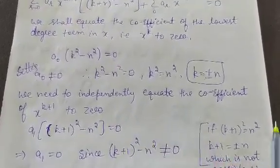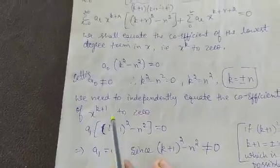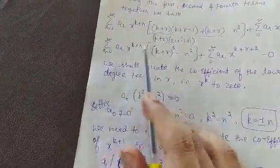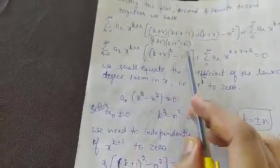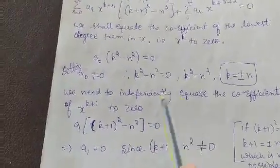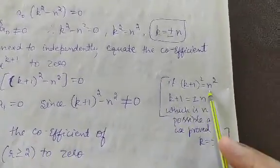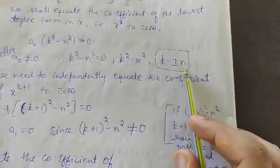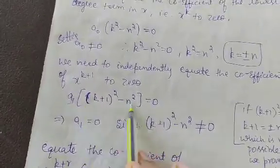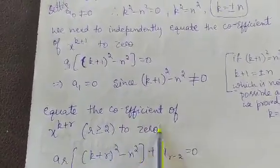Next, we equate the coefficient of x^(k+1) to zero. Substituting r = 1 gives a₁[(k+1)² − n²] = 0. Since k = ±n, the quantity (k+1)² − n² ≠ 0 (as k+1 = ±n is not possible), so we must have a₁ = 0.